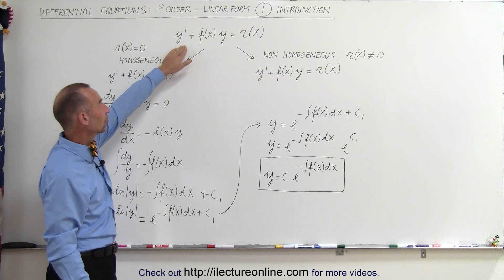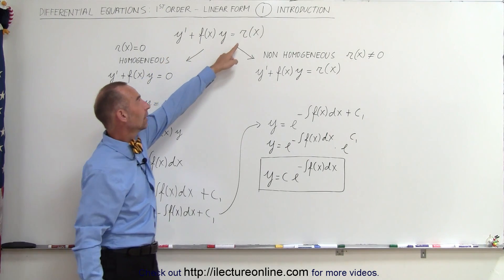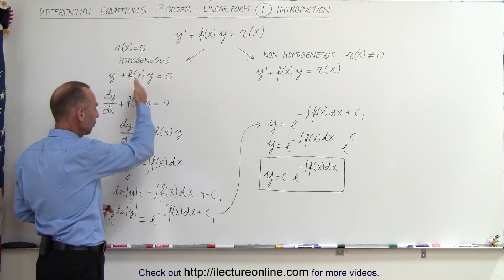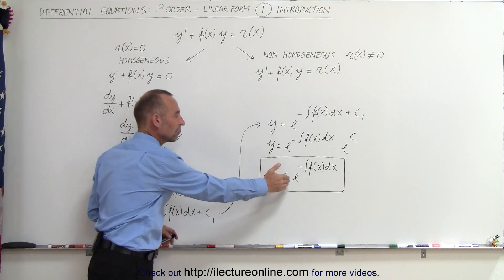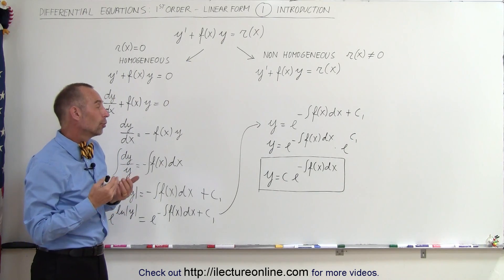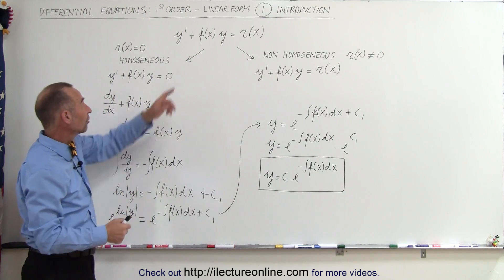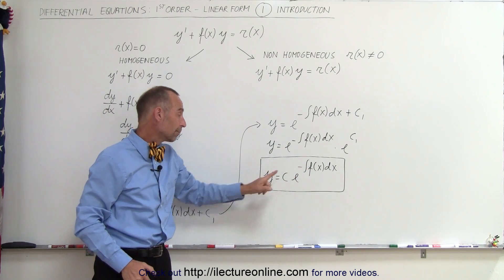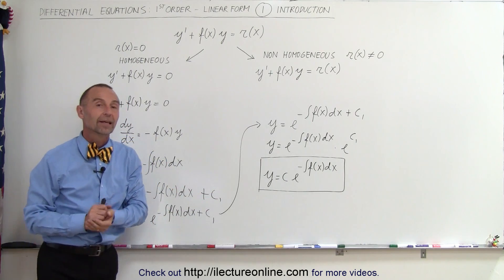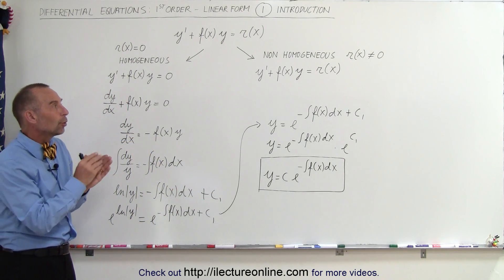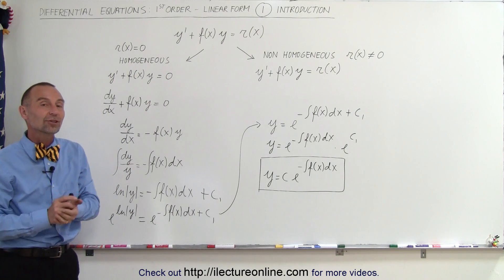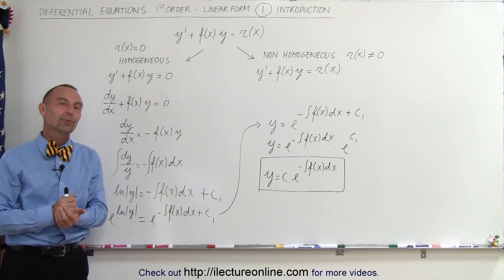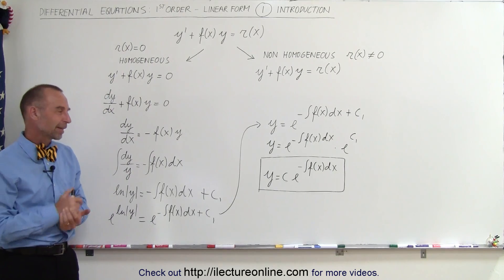So, if we have a differential equation of this linear form but with zero on the right side of the equal sign, we have the homogeneous form, for which we can find a fairly straightforward general solution. Depending on what the function of x is, we simply plug it in, integrate it, and that becomes the exponent of e, which is the solution to the differential equation. In a later video, we will show how to find the solution to the non-homogeneous form. This has been a nice introduction to the linear form of the first-order differential equation.